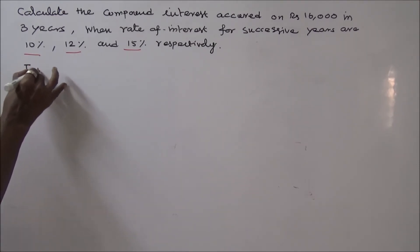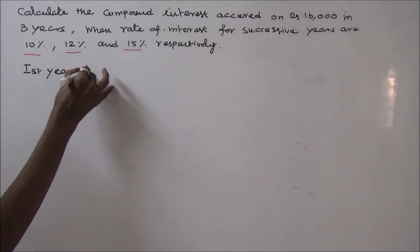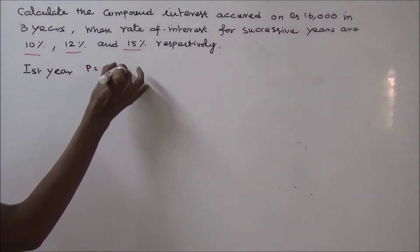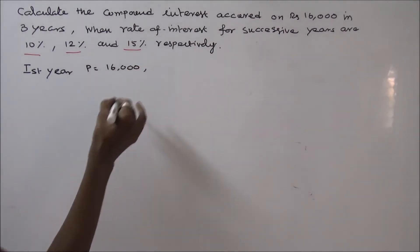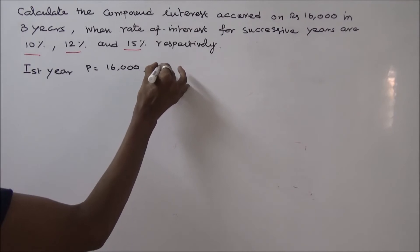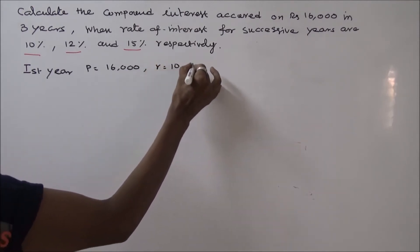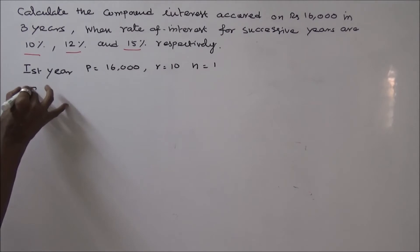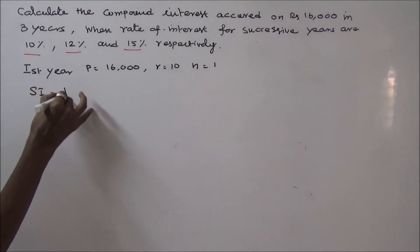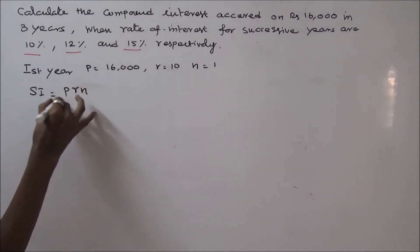For the first year, the principal P is equal to 16,000, rate of interest R is equal to 10%, and N is equal to 1. I have calculated the simple interest, that is equal to PRN by 100.